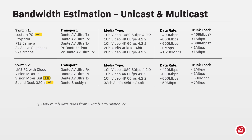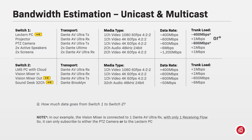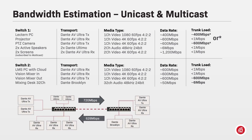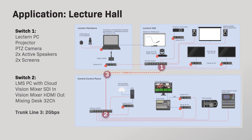Back to our basic question: how much data goes from switch 1 to switch 2? As our vision mixer connected to switch 2 has a Dante AV Ultra RX with just one video receiving flow, either the unicast flow from the PTZ camera or the multicast flow from the lectern PC can be received at any given time — both won't be able to subscribe to the same receiving flow simultaneously. The vision mixer output being multicast to the screens at the rear, and audio from the sound desk multicast to the active speakers. Summing up and adding the 20% reserve, the maximum bandwidth would be around 720 megabits per second in one direction and 728 megabits per second in the other. Working at 70% saturation of your links is healthy, so a simple 1 Gigabit per second trunk line would suffice for this example.